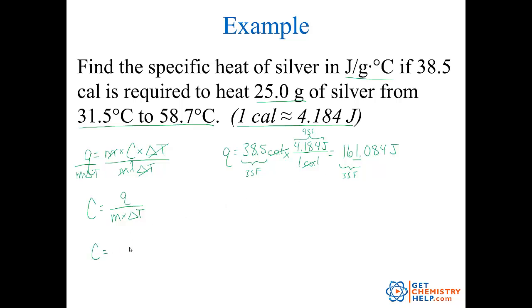So specific heat C is equal to 161.084 joules. And I've underlined that third significant digit, just to remind myself, divided by the mass. Well, the mass was 25.0 grams times delta T. So final minus initial. So 31.5 and it went to 58.7. So the final, of course, is this one. So 58.7 degrees Celsius minus the initial, it was at 31.5 degrees Celsius.